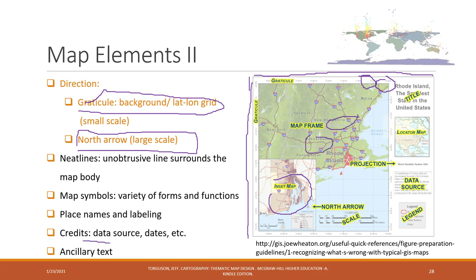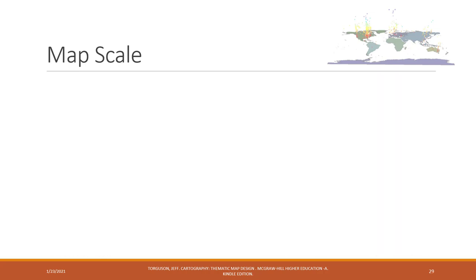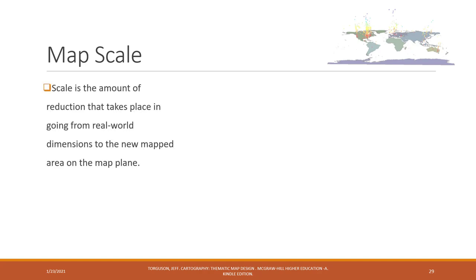And also credits, data source, and also additional information about the map. So those are the basic map elements. Now let's talk about map scale. Map scale is the scale between the mapped body versus the object that's in the real world.